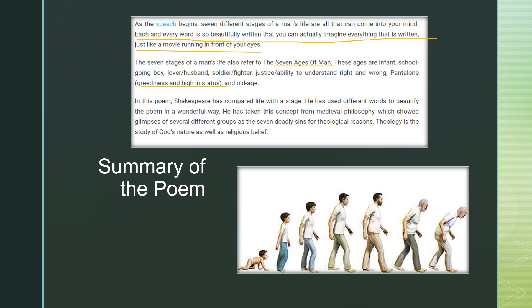This poem has a lot of imagery, where each stage is so beautifully explained that you can actually imagine everything written, just like a movie running in front of your eyes. There are seven stages referred to as seven ages of man, right from the infant to old age. Shakespeare has compared life with a stage, using different words to beautifully express the poem. He has taken this concept from medieval philosophy, showing glimpses of different groups as the seven deadly sins for theological reasons — theology being the study of God's nature as well as religious belief.